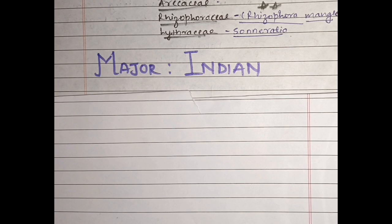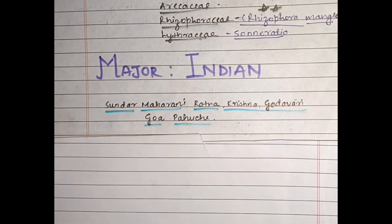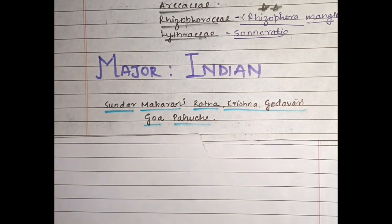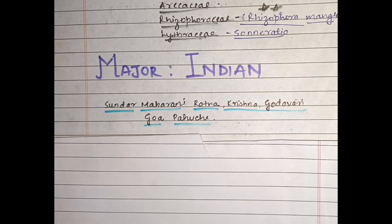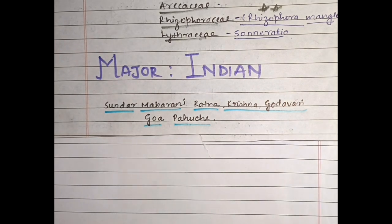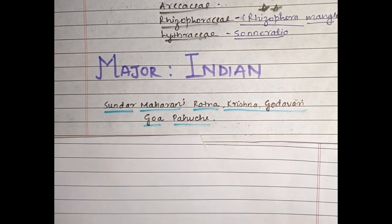Now let's study about those important mangrove regions which are found in India. India ke kuch famous aur important mangrove regions ke baare mein hum padhne waale hain. Iske liye bhi maine ek trick yahan prepare ki hai — trick un logon ke liye hai jin ko difficulty hoti hai naam yaad rakhne ki. Trick hai: Sundar maharani ratna Krishna Godavari.